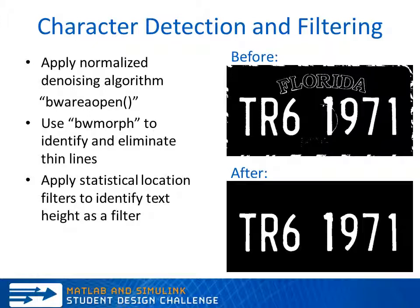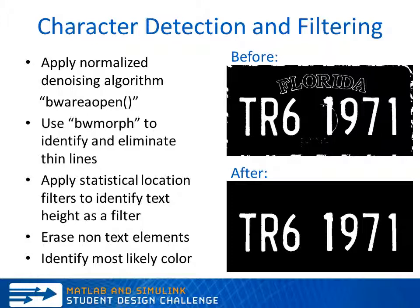After that, we can apply a statistical location filter to identify text height as a filter. We assume that the top of the text must be in the top half of the image, and that the bottom of the text must be in the bottom half of the image. We can also erase all non-text elements and identify the most likely color.